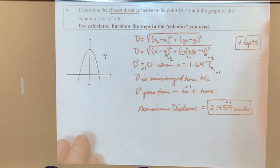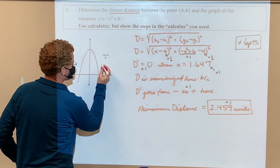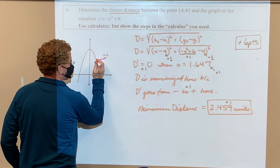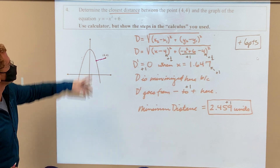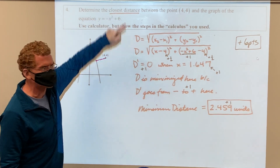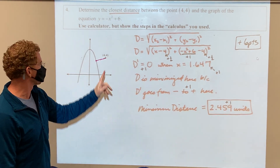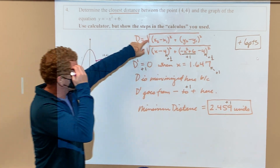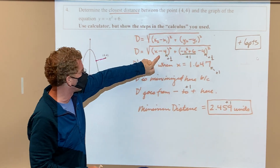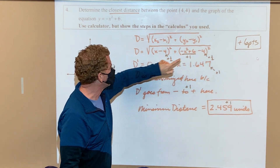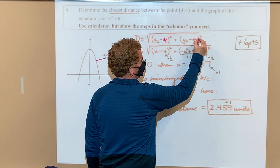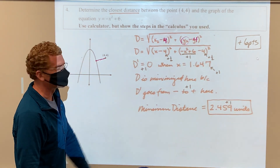Determine the closest distance between a point and that graph. If you think about this, the closest distance will be whatever line makes a perpendicular. If I'm looking for closest distance, that's minimum distance—write out the distance formula, because technically you're finding the distance between these two points. That's my distance formula. I know one point, I'm going to plug it in, and then once I plug that 4 in, I need to get rid of that y. If only I knew what y was.